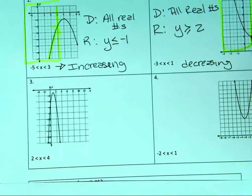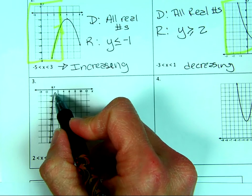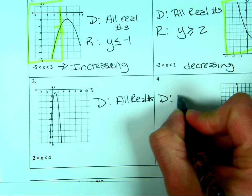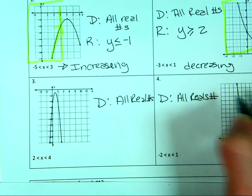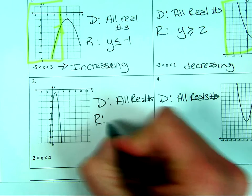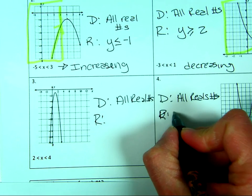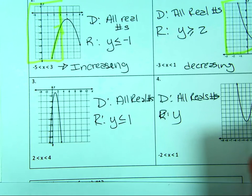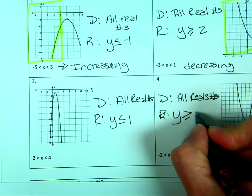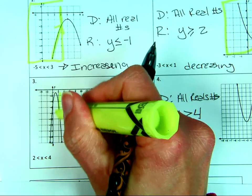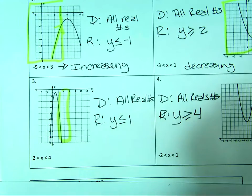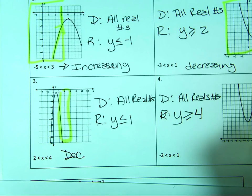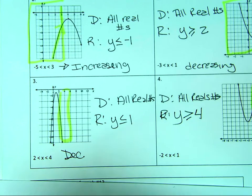For two more graphs: domain is all real numbers for both — that's always the case for up-and-down parabolas. For range, the first one has its vertex at 1 and opens down, so y is less than or equal to 1. The other opens up with vertex at 4, so y is greater than or equal to 4. For intervals: from two to four it looks like the graph is decreasing; from negative two to one, it looks like it's increasing.